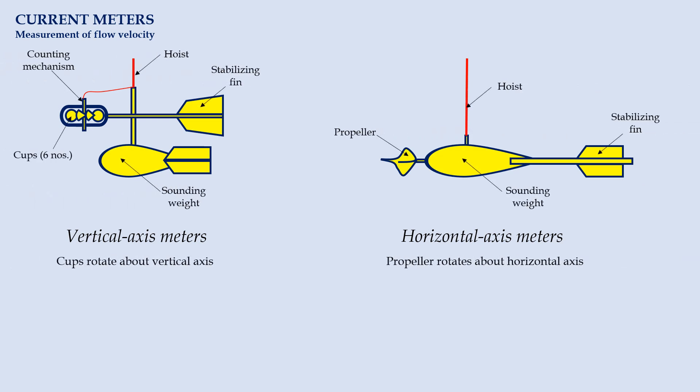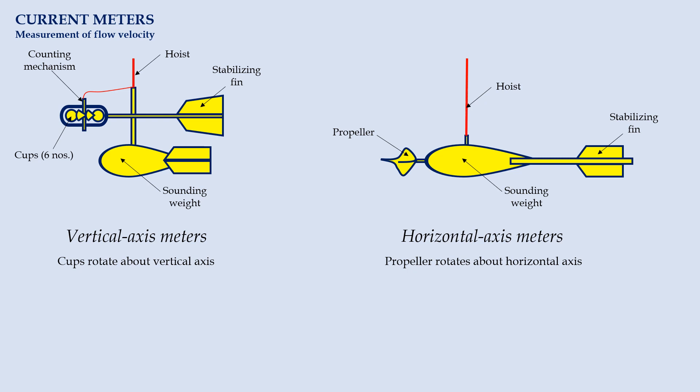A vertical axis meter uses cups that rotate in horizontal plane to measure the flow velocity. A horizontal axis meter, on the other hand, takes measurement using a propeller in front of sounding weight that rotates about the horizontal axis. Note that a vertical axis meter may mistakenly show positive velocity when it is being lifted vertically in still water.